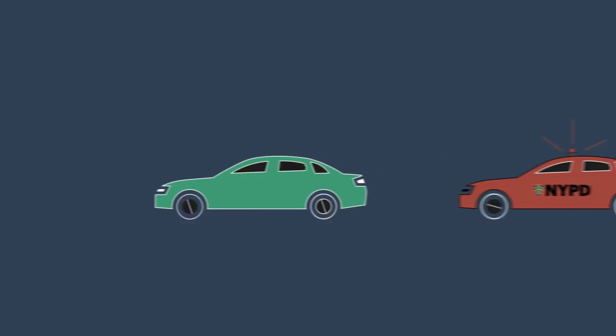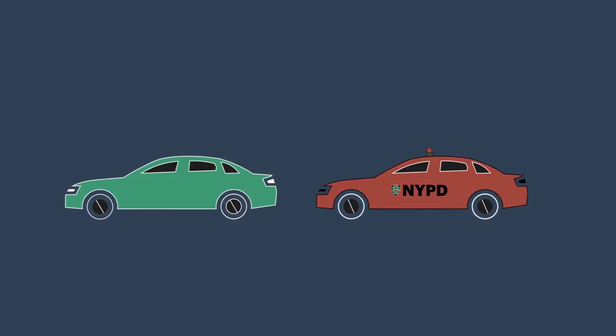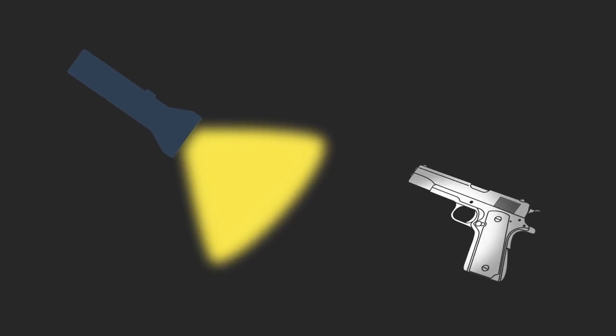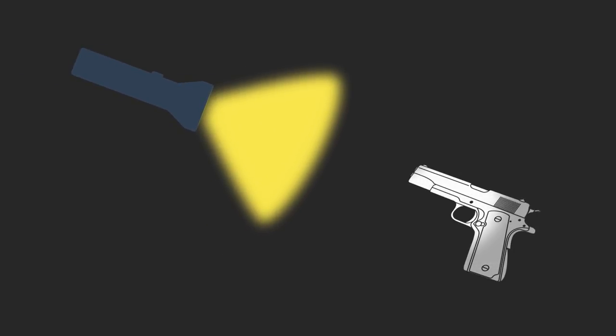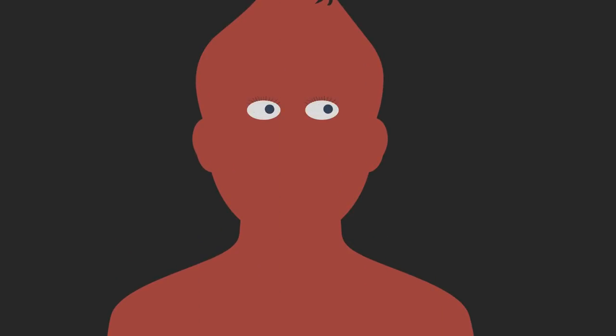Let's start with a scenario. John is driving in a car and he's pulled over by a cop for a minor traffic violation. When the cop is writing up his ticket, he notices a gun in the backseat of the car, so the cop ends up arresting John for gun possession. But John says the gun isn't his — in fact, he says he didn't even know the gun was in the car.